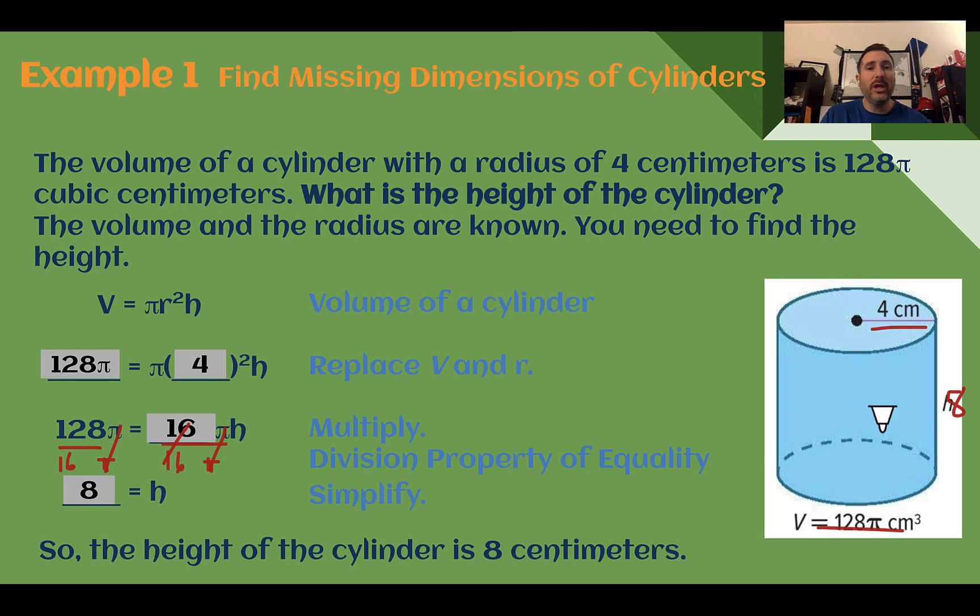And if we want to double check, we could plug these both in, the radius and the height, and calculate out the volume like we did in lesson one to see if we get the volume they told us. So working backwards, we can check to see if we get what they told us to start with.